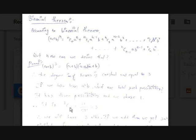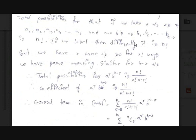Similarly, if we take the expansion (a+b)^n, we can now enter the general term a^r·b^(n-r) and find its coefficient. Let's see how we can find that coefficient.